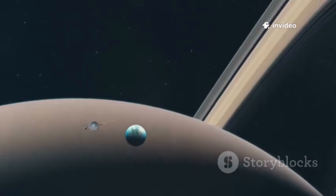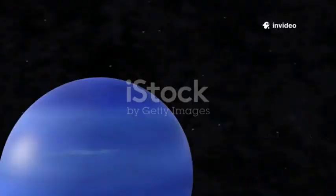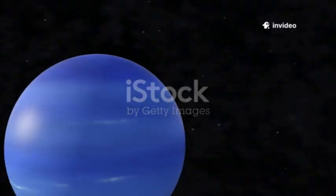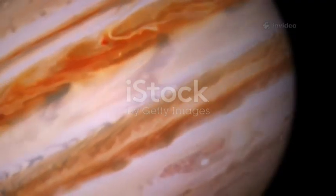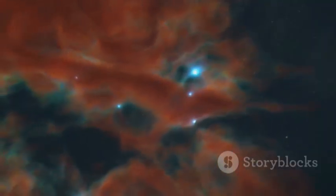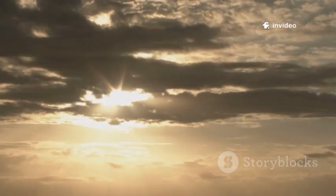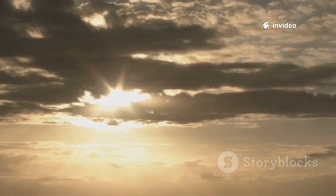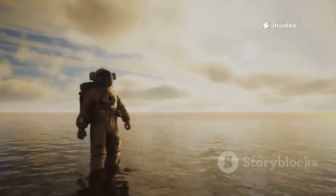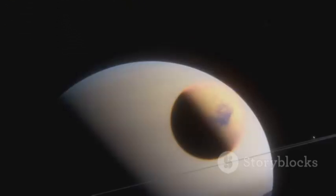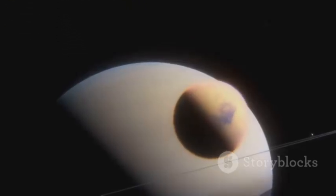Voyager 2's great dark spot was Neptune's claim to fame, a massive storm that could swallow Earth. Scientists thought it would last centuries, like Jupiter's red spot. But when Hubble looked in 1994, the storm had vanished. Neptune's storms are fleeting, appearing and disappearing in just a few years. This changed our view. Neptune's atmosphere is a shifting, unpredictable canvas. Hubble has since spotted new dark spots forming and fading.